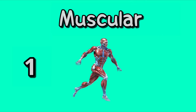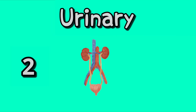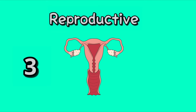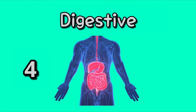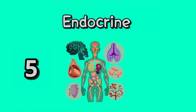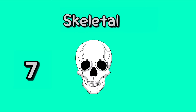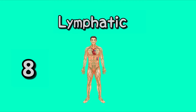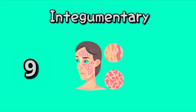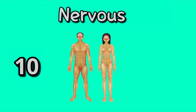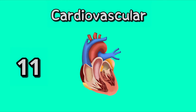There are 11 organ systems in the human body. The first system is muscular, urinary, reproductive, digestive, endocrine, respiratory, skeletal, lymphatic, integumentary, nervous, and the cardiovascular system.